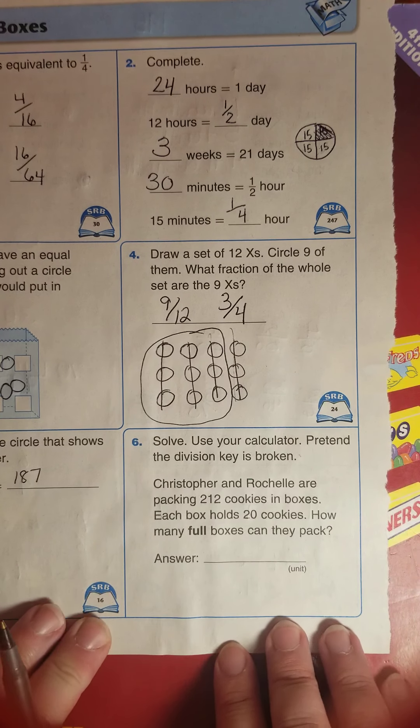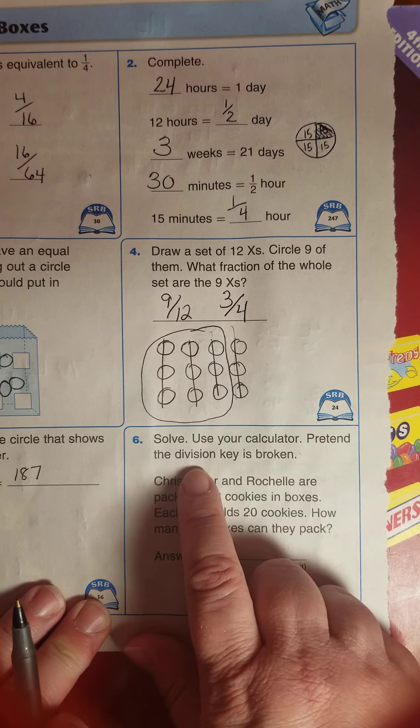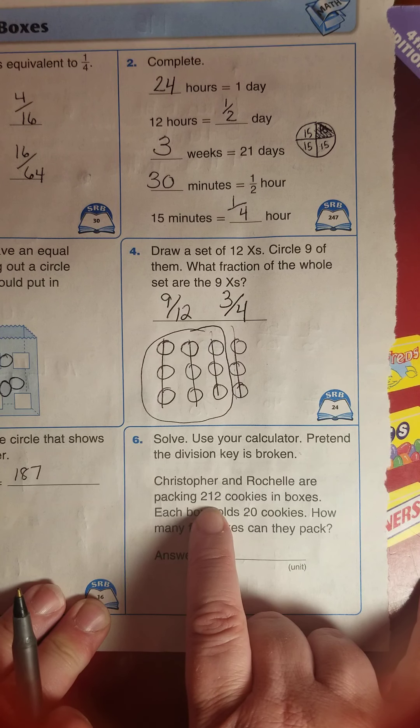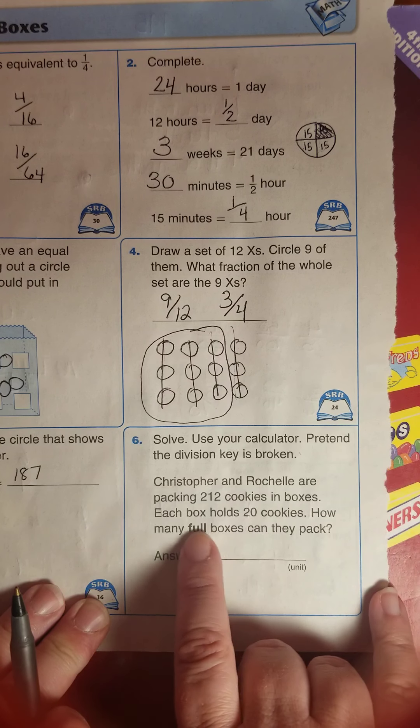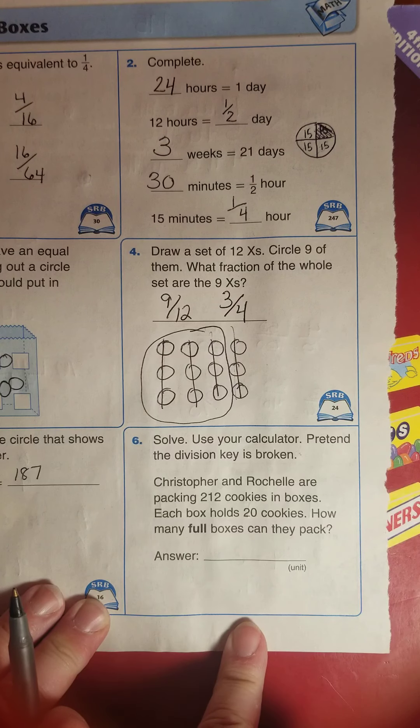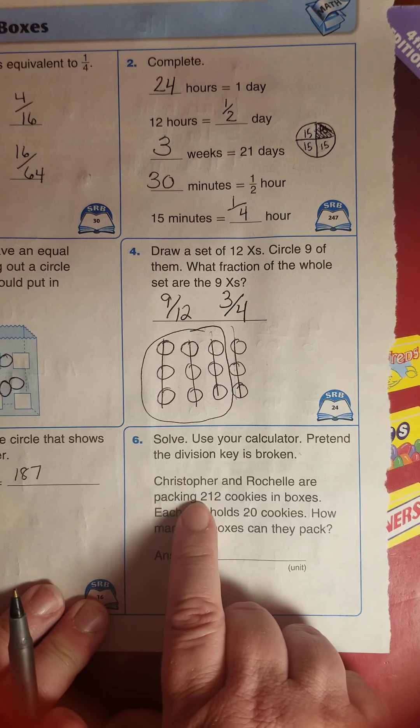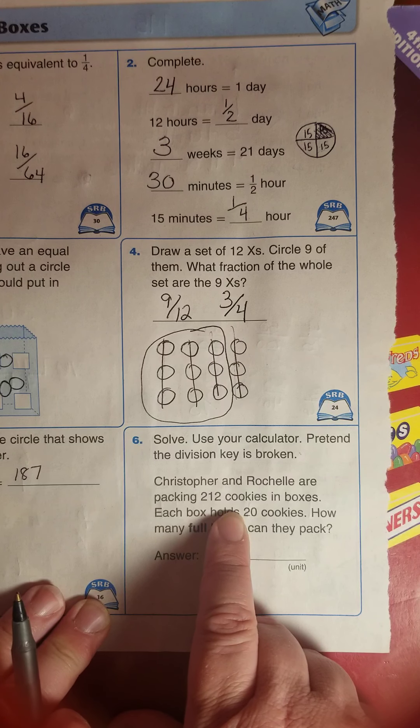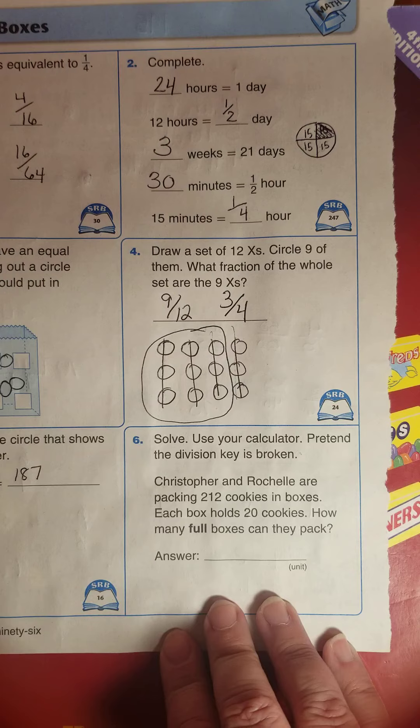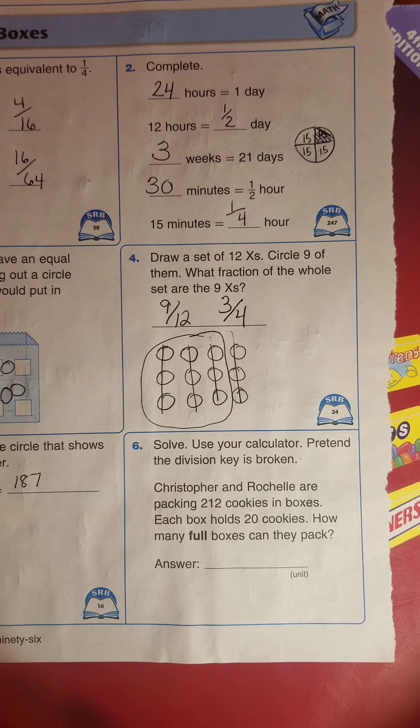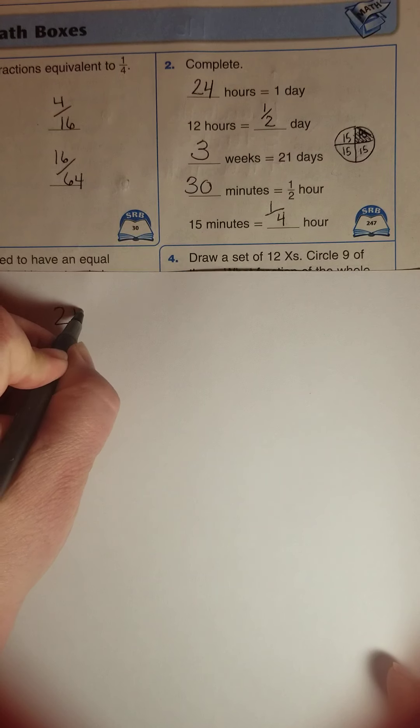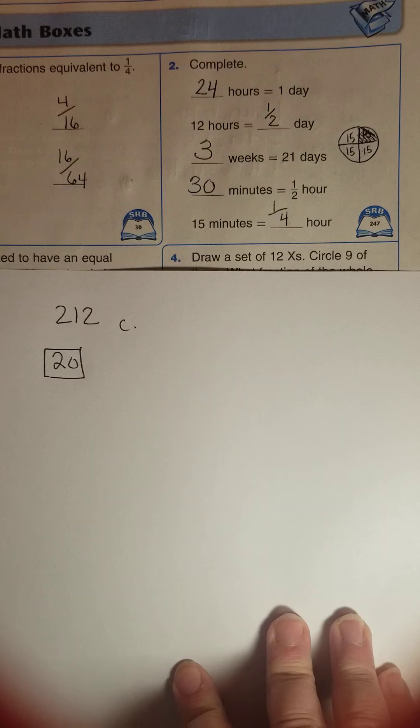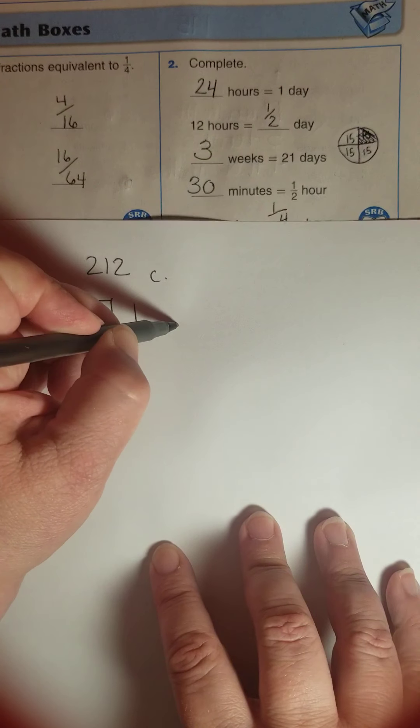Use your calculator. Pretend the division key is broken. Guess what? I don't have a calculator right here. Let's see if I can do it without a calculator. Pretend that the division key is broken. Christopher and Rochelle are packing two hundred twelve cookies in boxes. Each box holds twenty cookies. How many full boxes can they pack? If I had a calculator, I would put in two hundred twelve divided by twenty. But we can't use the division key, so I can't divide. Could I do some adding? Could I draw a picture? I'm going to just make a note on some blank paper here. Two hundred twelve cookies and twenty in a box. How many boxes of twenty?